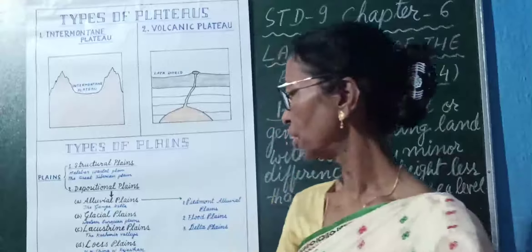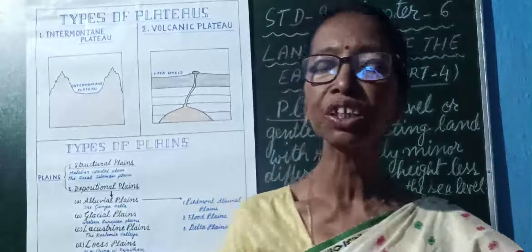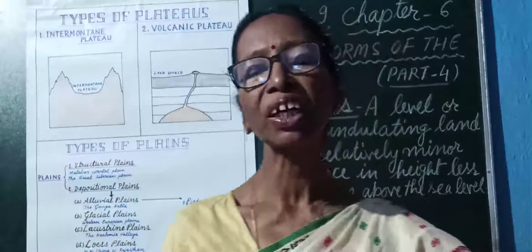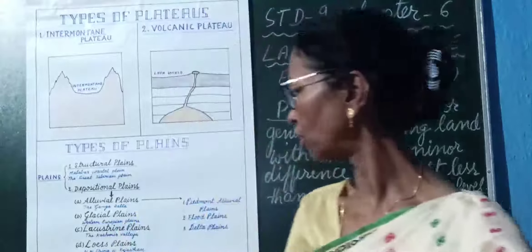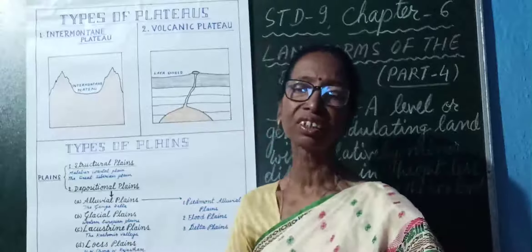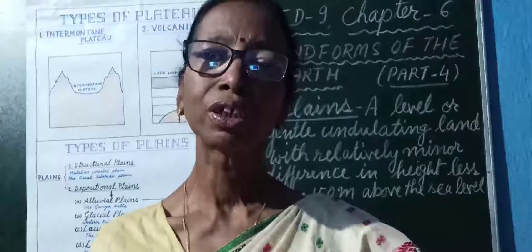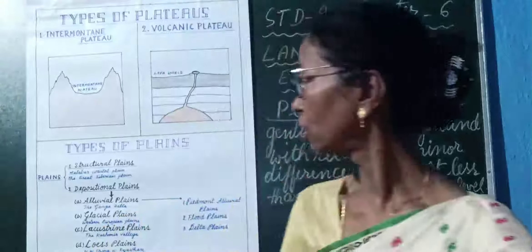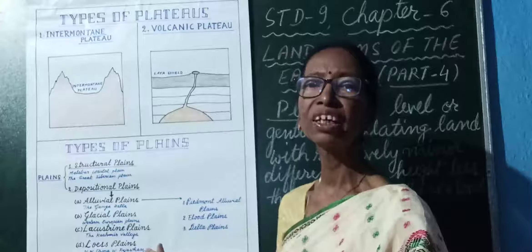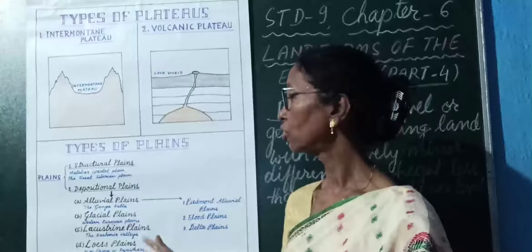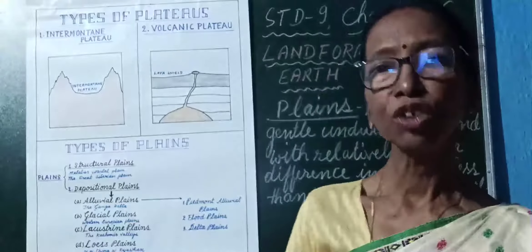Next is the loess plain. Loess plains are formed due to the depositional work done by the wind. Large sandy particles are carried and transported from desert areas and deposited, forming a plain known as a loess plain. Examples include the north-western part of China, where a large loess plain is formed, and also the western part of Rajasthan, where loess plains are found.